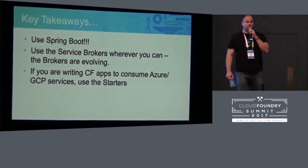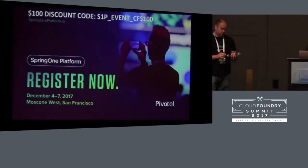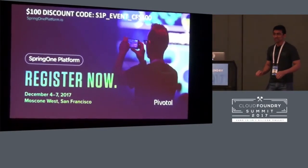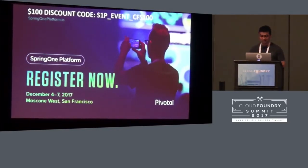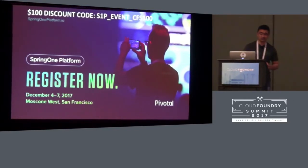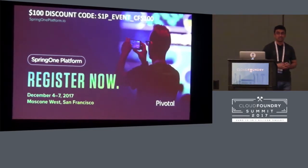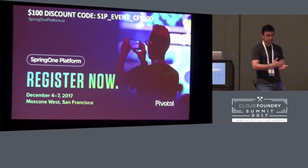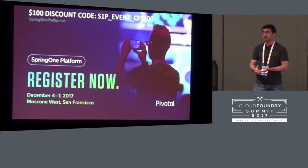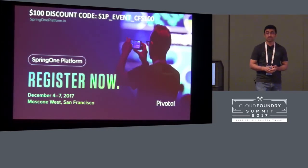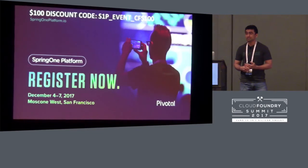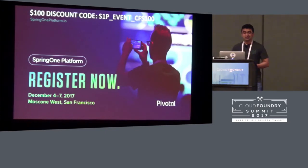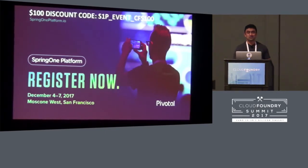Lastly, if you like Spring, the conference you want to be at is SpringOne Platform — December 4th through 7th this year at the Moscone Center. We are really hoping that by that time we have made a lot more progress with the starters and they are ready and available on start.spring.io, so we get a chance to talk about it again at that conference. That's the plan — we'll see how things go.